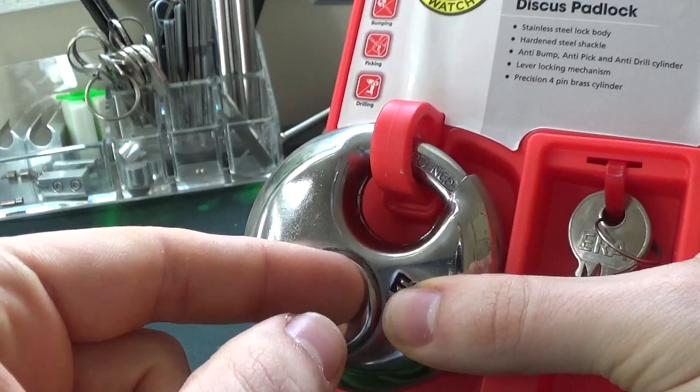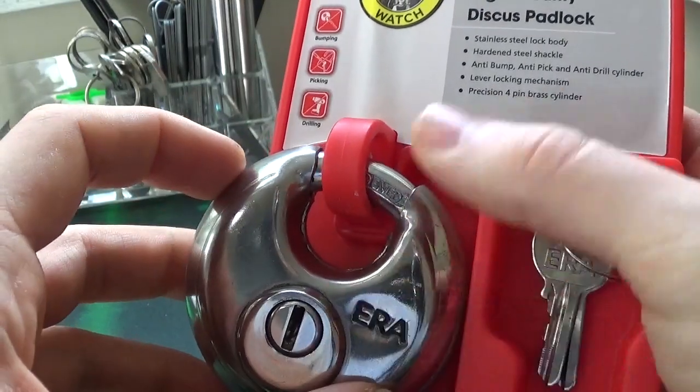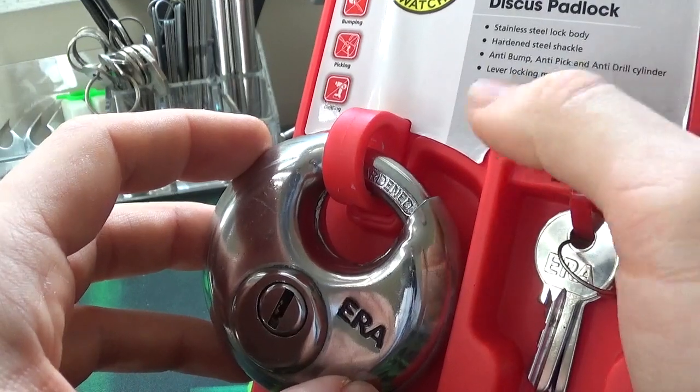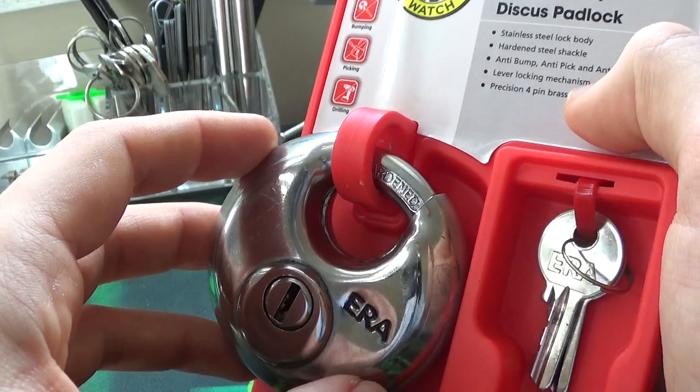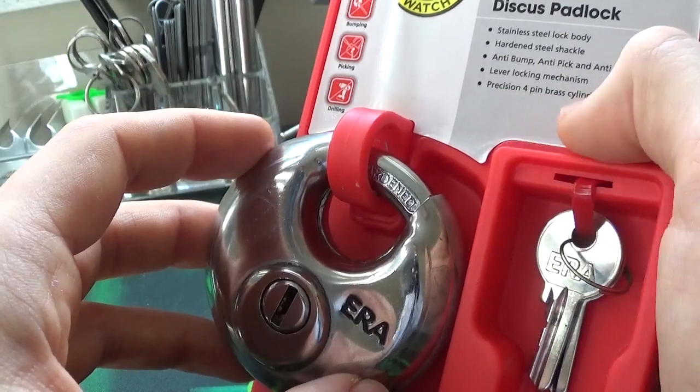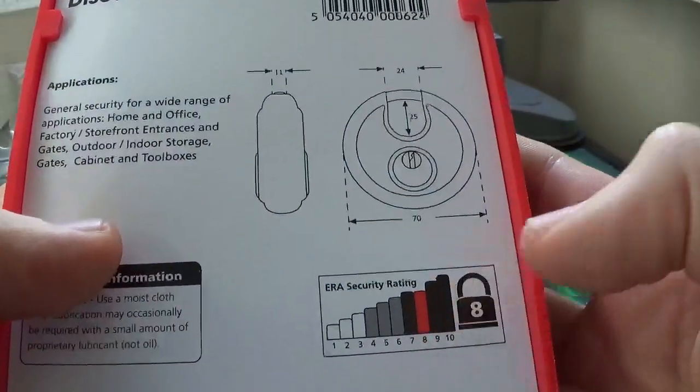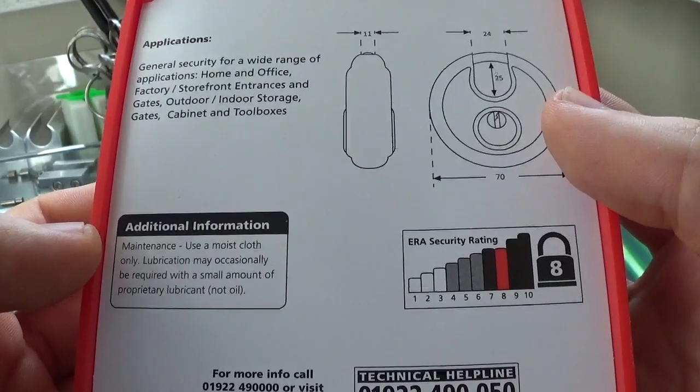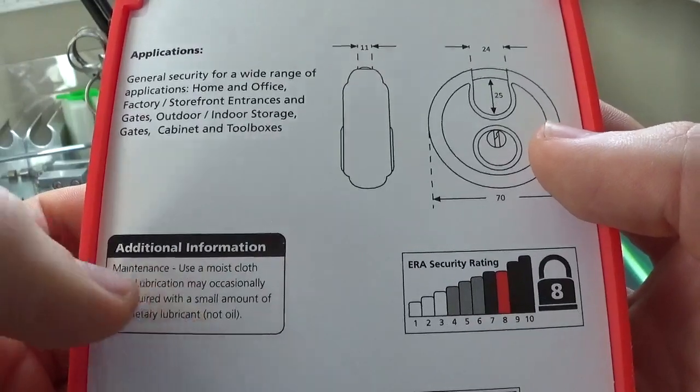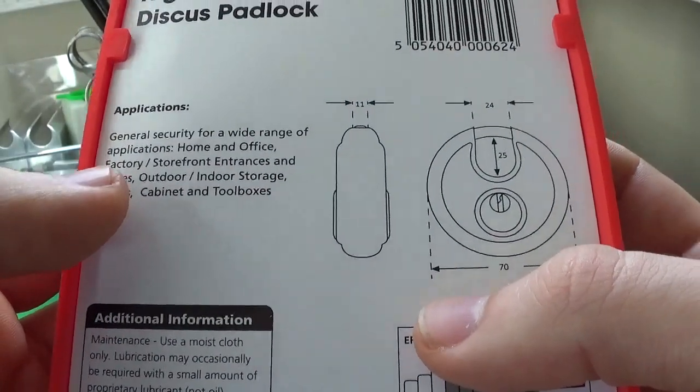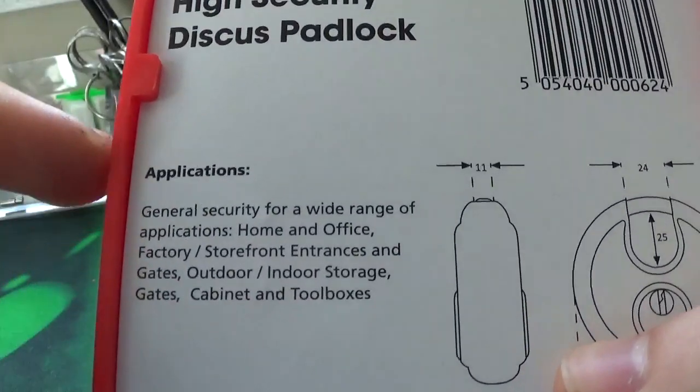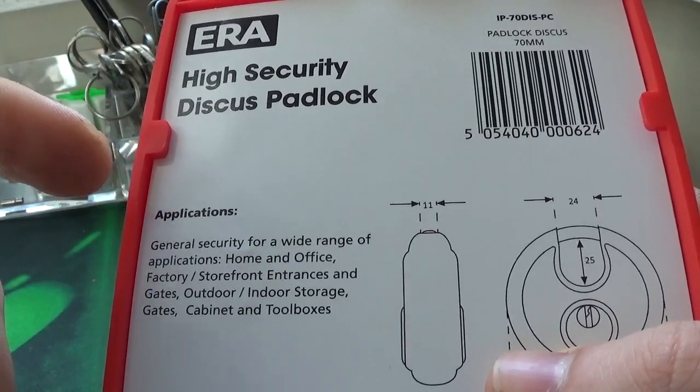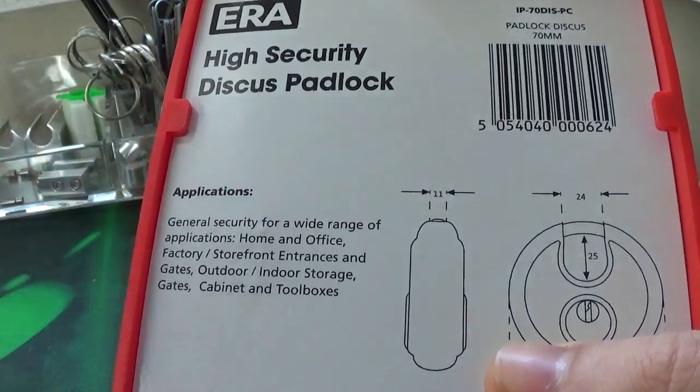We'll see about picking resistance. Bumping resistance against a four pinner, I don't know. It also has a paracentric keyway so that helps with anti-picking. Stainless steel lock body, hardened steel shackle, anti-bump, anti-pick, anti-drill cylinder, lever locking mechanism and precision four pin brass leather, eight out of ten ERA security rating.